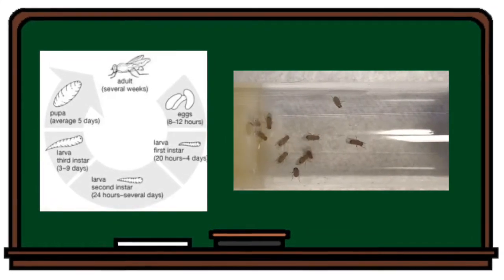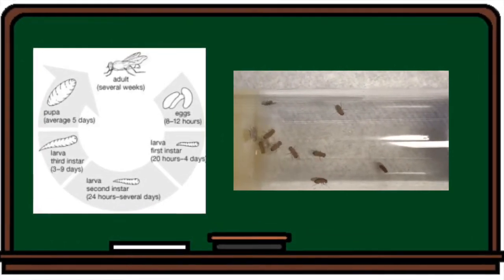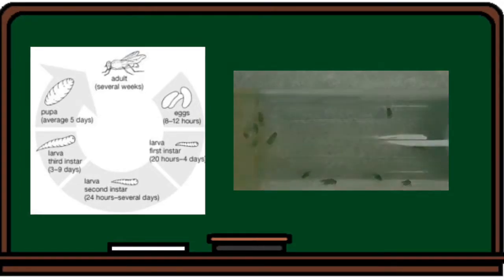Drosophila are good model organisms because they are small and have short lifespans. This makes them convenient to keep in the lab. Here is a real-life example of Antennapedia and Drosophila. The fly on the left has normal antenna, and the fly on the right is an Antennapedia mutant, like Phil.